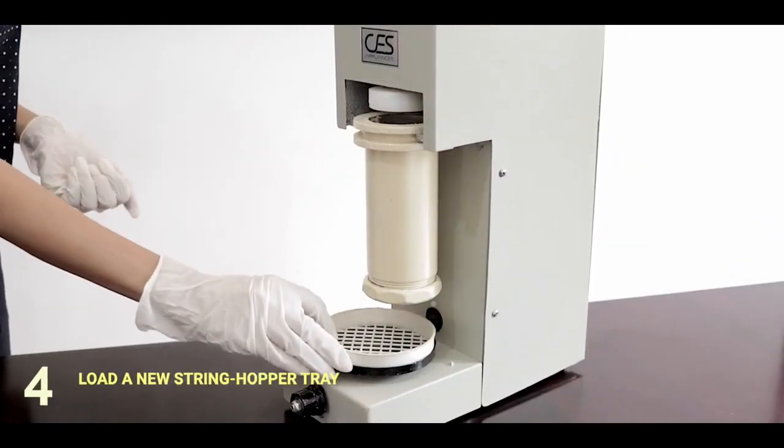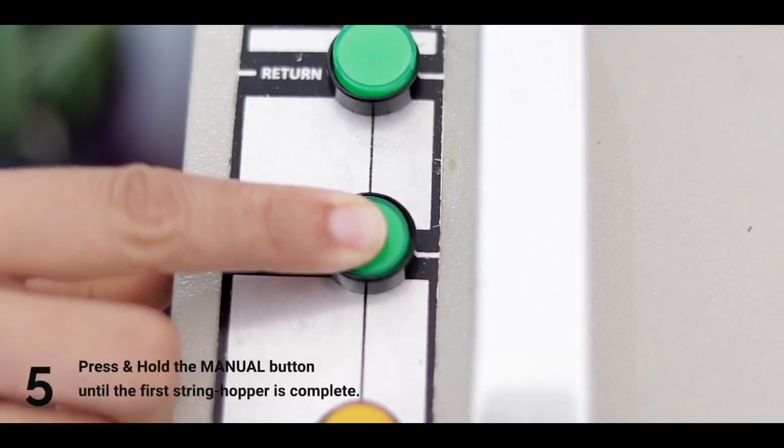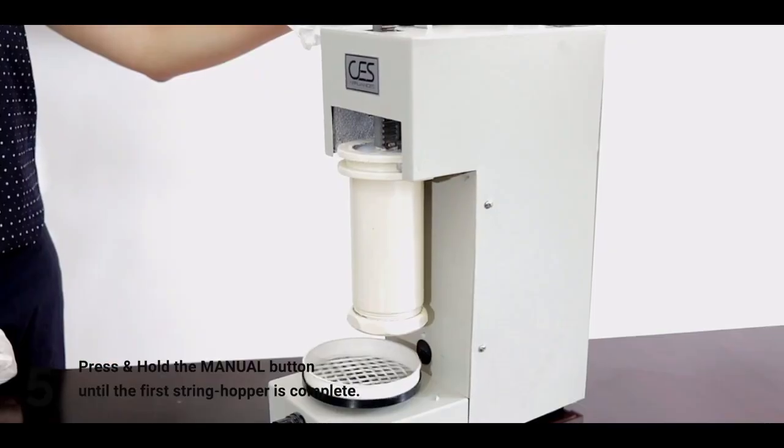Place the string hopper tray. Press and hold the manual button until the first string hopper is made.